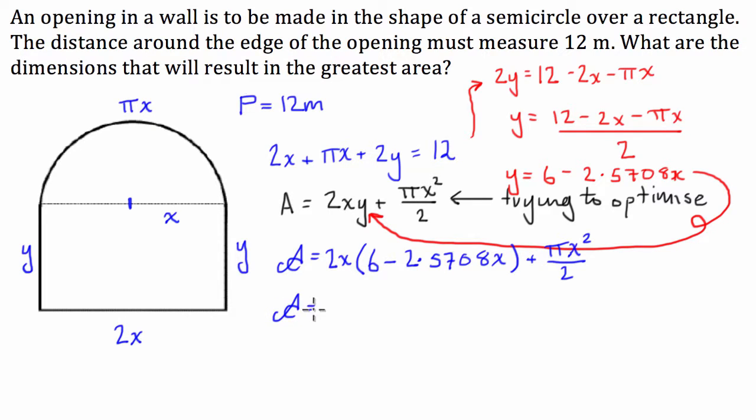We're going to have area is equal to 2 times 6 is 12x, minus 5.1416 x squared,